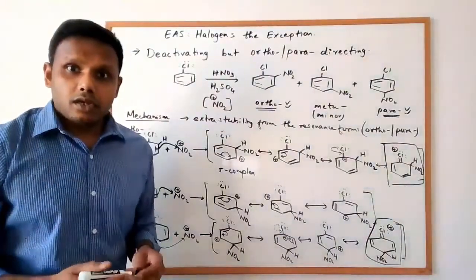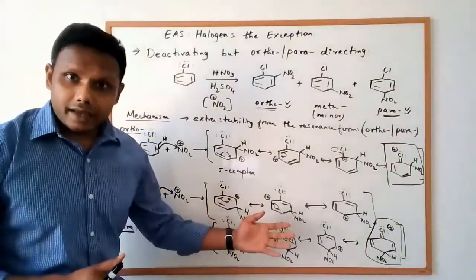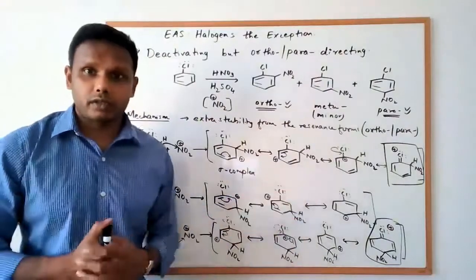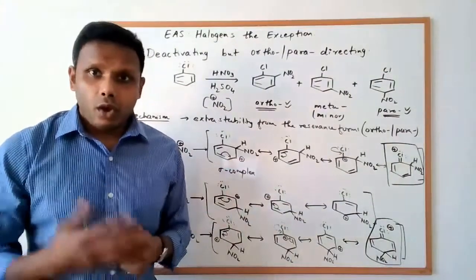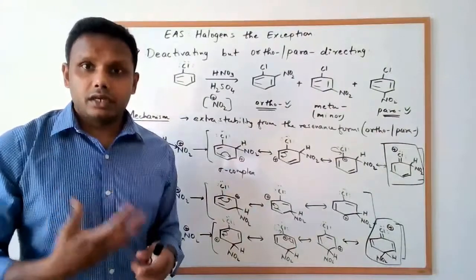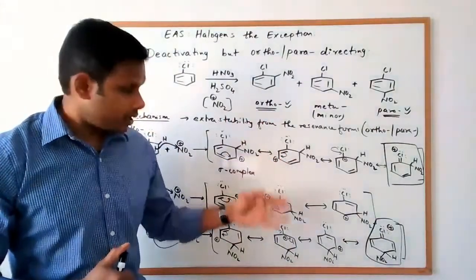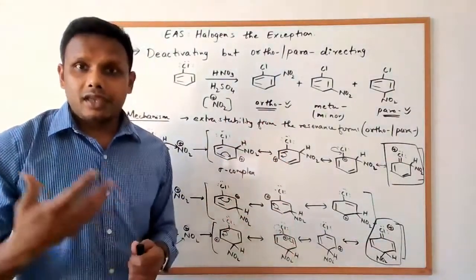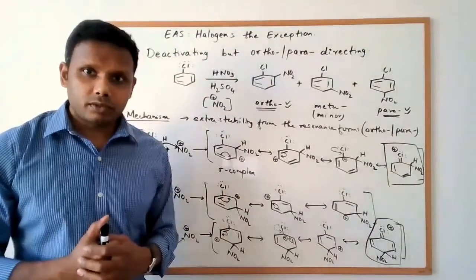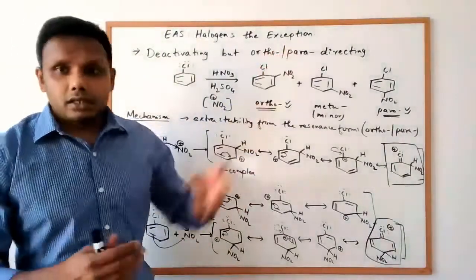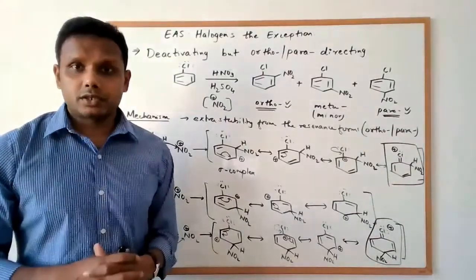Surveying all three sigma complexes, the ortho and the para sigma complexes each have four resonance forms, including the extra resonance form involving the chlorine lone pair. The meta sigma complex lacks this extra resonance form and has only three. This extra stabilization explains why the ortho and para products are favored. So halogens, although deactivating due to the dominant inductive effect, are ortho-para directing because of this extra resonance stabilization available to the ortho and para sigma complexes. I hope all of you find this discussion helpful. Bye.